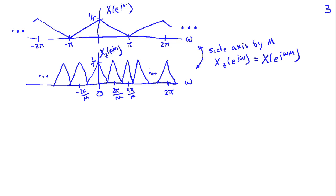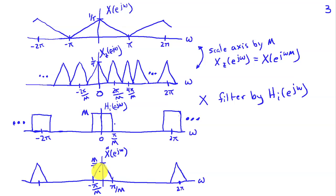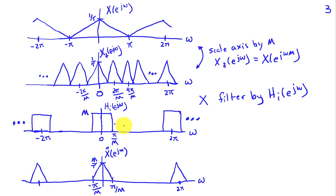Now we filter that signal. To get x̃(e^{jω}), which has only one replicate between −π/m and π/m and is empty out to 2π, the low-pass filter H_i must have a gain of m and a passband between −π/m and π/m. Applying this to our zero-stuffed signal gives us the correct discrete-time Fourier transform at the higher sampling rate.